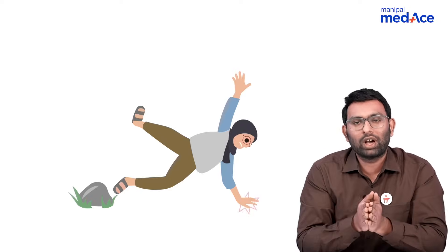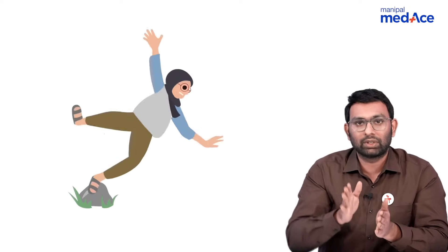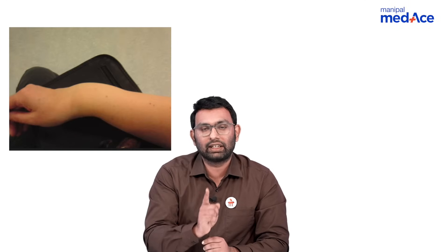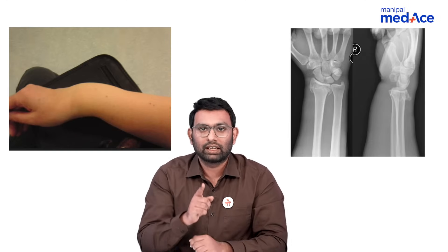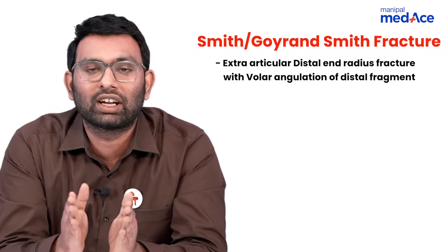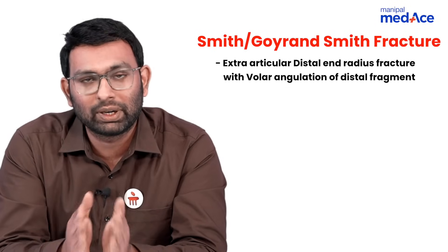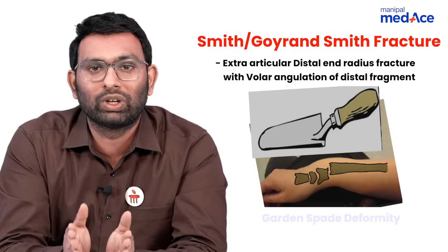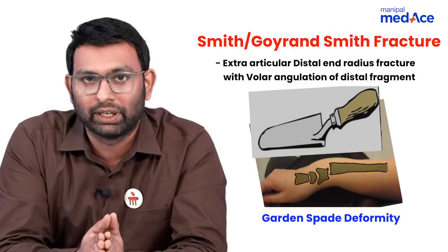Another story is of an elderly adult who has a fall on an outstretched hand, but this time the wrist goes into plantar flexion. Her clinical images look like this and her x-rays look like this. This is a case of a Smith or a Goyrand-Smith fracture, where there is an extra-articular distal end radius fracture but the distal fragment goes into volar angulation. On clinical images, you will get a garden spade deformity.